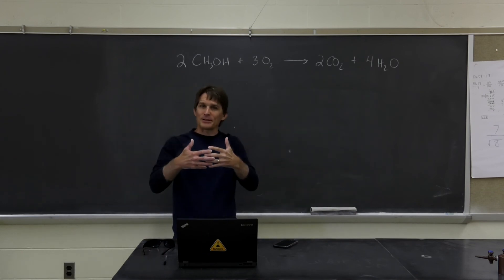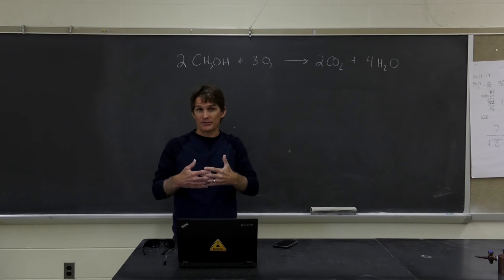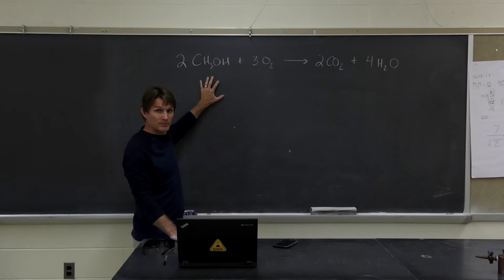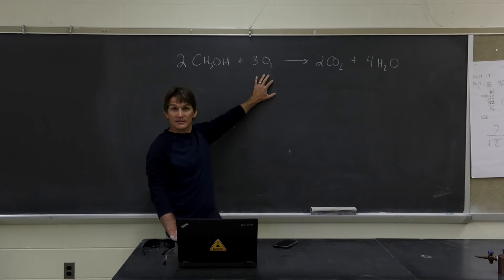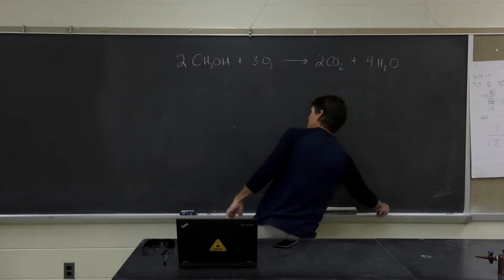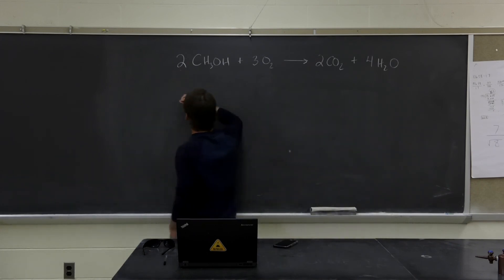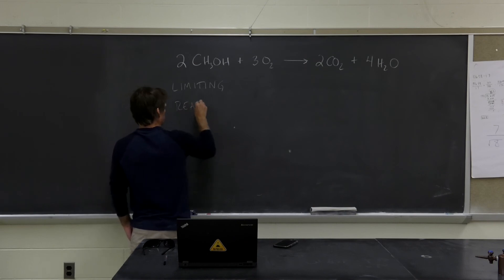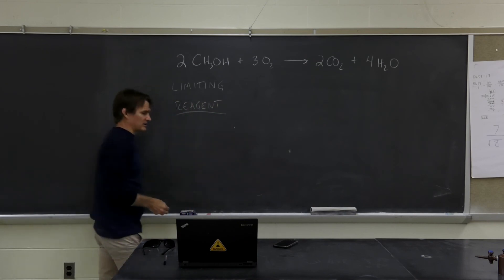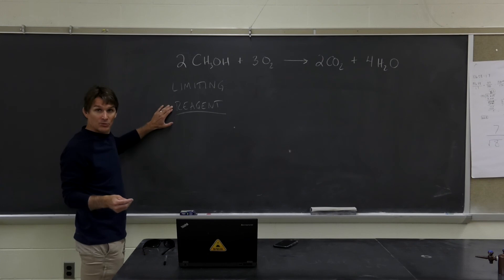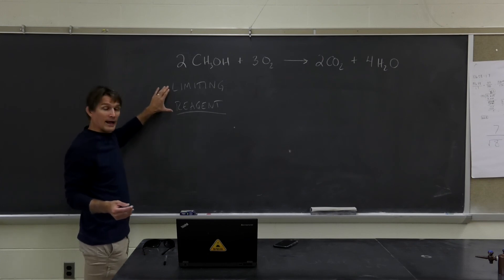The reason I point this out is because sometimes when we're studying chemical reactions, it is the case that one of the reactants gets completely used up and some of the other reactant is left over and still available to react. The reactant that gets used up, we actually call that the limiting reagent. So our limiting reagent in a chemical reaction is going to be one that gets completely used up, and it limits how much of the reaction we see.